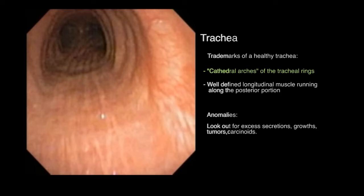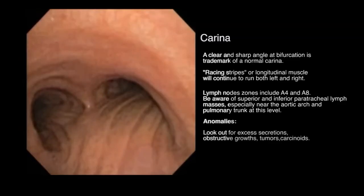Be aware that the innominate vein passes over the trachea closer to the carina. Left and right recurrent laryngeal nerves adhere bilaterally to the trachea. The longitudinal muscle that runs posteriorly will continue to run down the left and right main bronchi and often into the lower lobes.